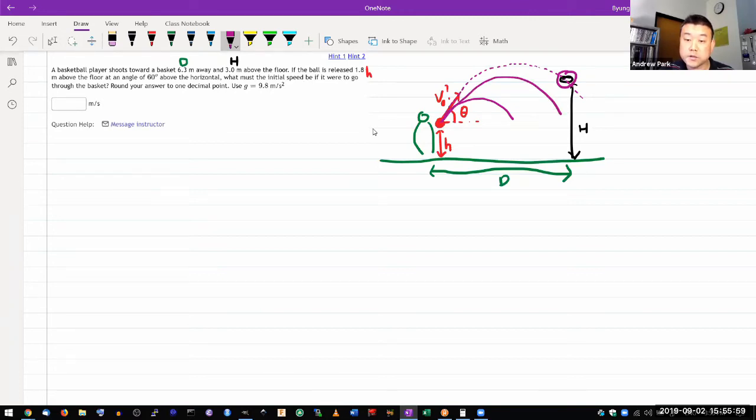So depending on that initial speed, the ball could be going through these many different trajectories. And I'm basically looking for one where the initial speed is just right so that the ball goes through the hoop and doesn't go beyond, doesn't fall short. That's what I'm looking for.